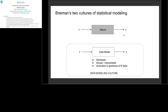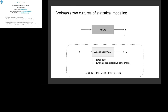This approach is very pervasive in the statistics literature even today, where researchers study guarantees for estimators and asymptotic behaviors. Breiman argued that we need to move away from this culture and adopt what he called the algorithmic modeling culture. In the algorithmic modeling culture, you don't assume any probabilistic model — you assume there's a very flexible function that maps inputs X to outputs Y. This is typically a black-box function like a neural network. You evaluate the model by looking at predictive performance on a test set.